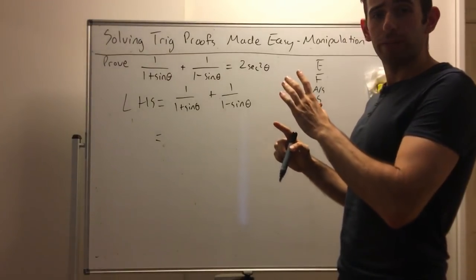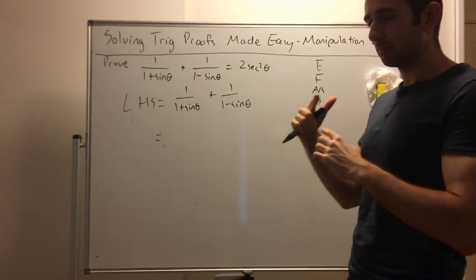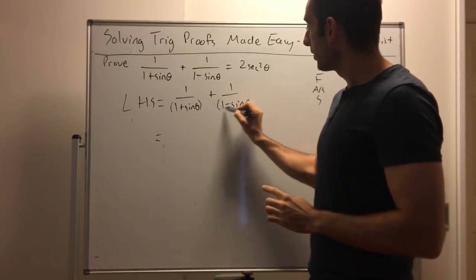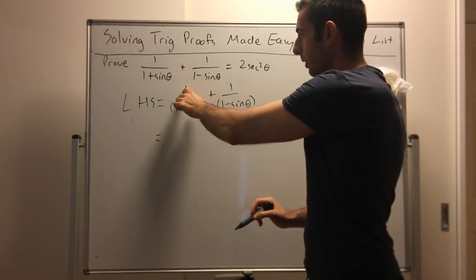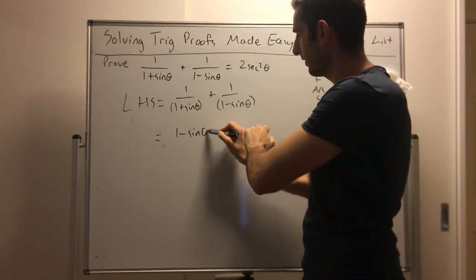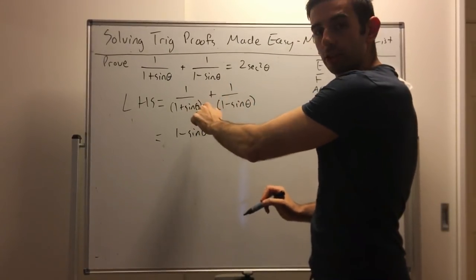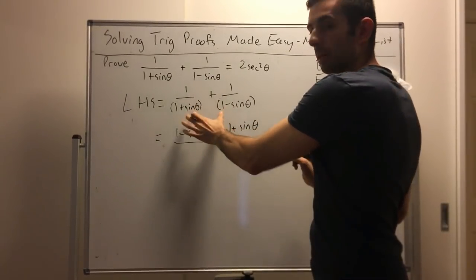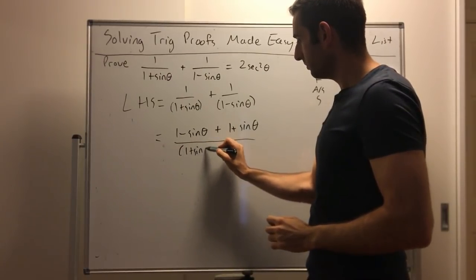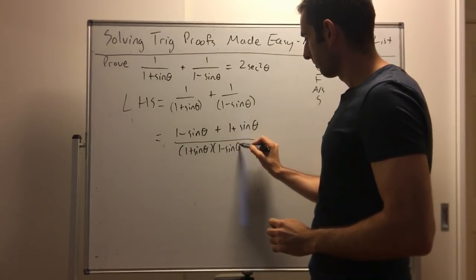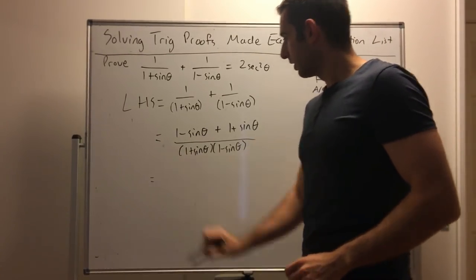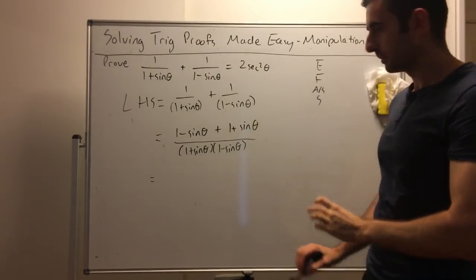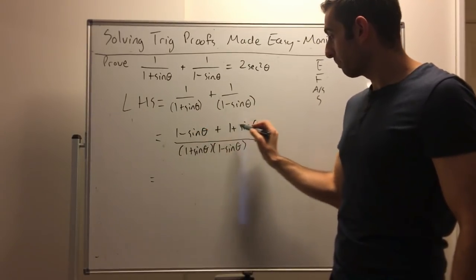To add fractions fast, we cross-multiply: numerator one times denominator two gives (1−sinθ), plus numerator two times denominator one gives (1+sinθ), and on the bottom we multiply the denominators together in brackets: (1+sinθ)(1−sinθ). Then we simplify like terms: 1+1 is 2, and −sinθ+sinθ cancels to zero, so the numerator simplifies to just 2.